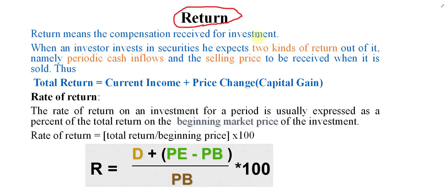Any expectation that you have because of your investment can be called a return. It is the real reward that you receive because of your investment. When the owner of the business provides capital to the business, they need some reward, some compensation — they expect something from the business. That expectation of reward or income from the business is called return. Return simply means the profit, anything that you expect from the business against the money you have provided.